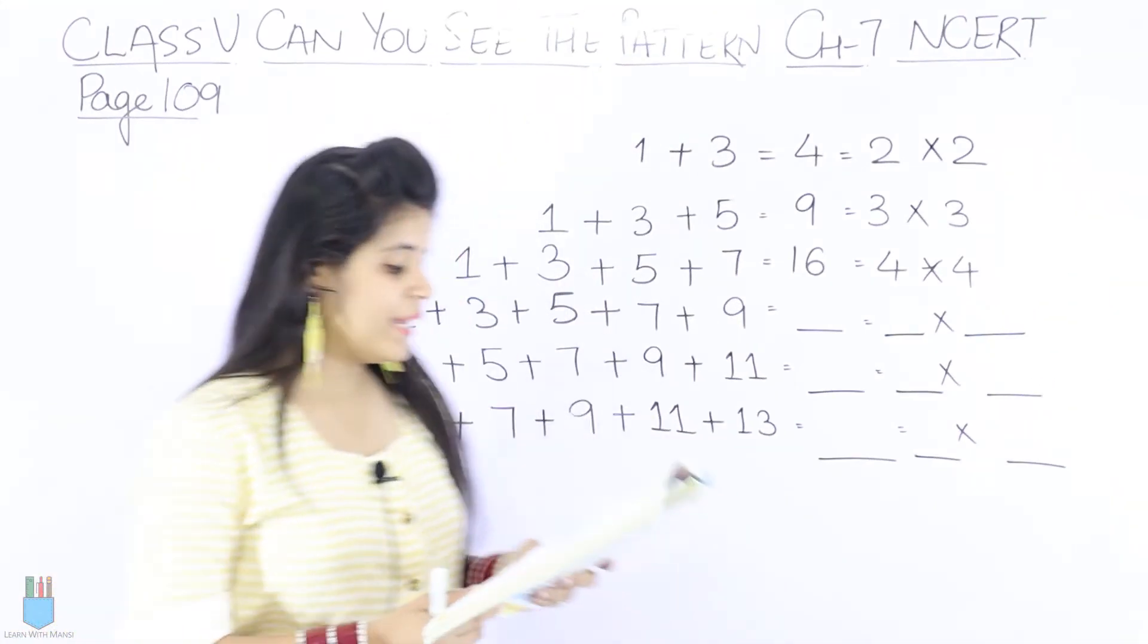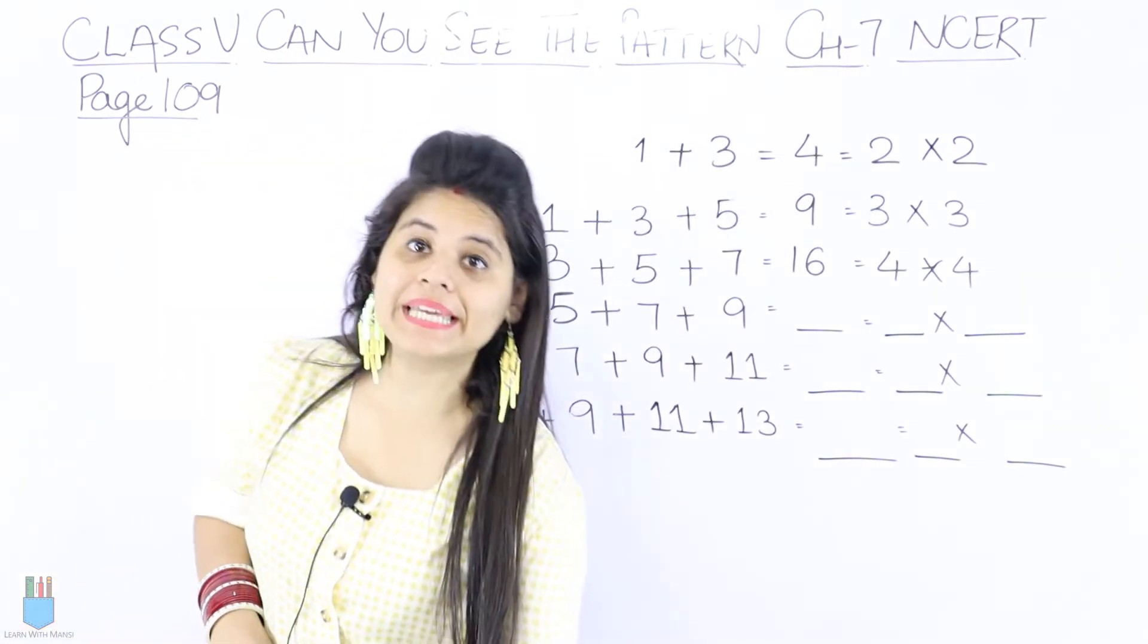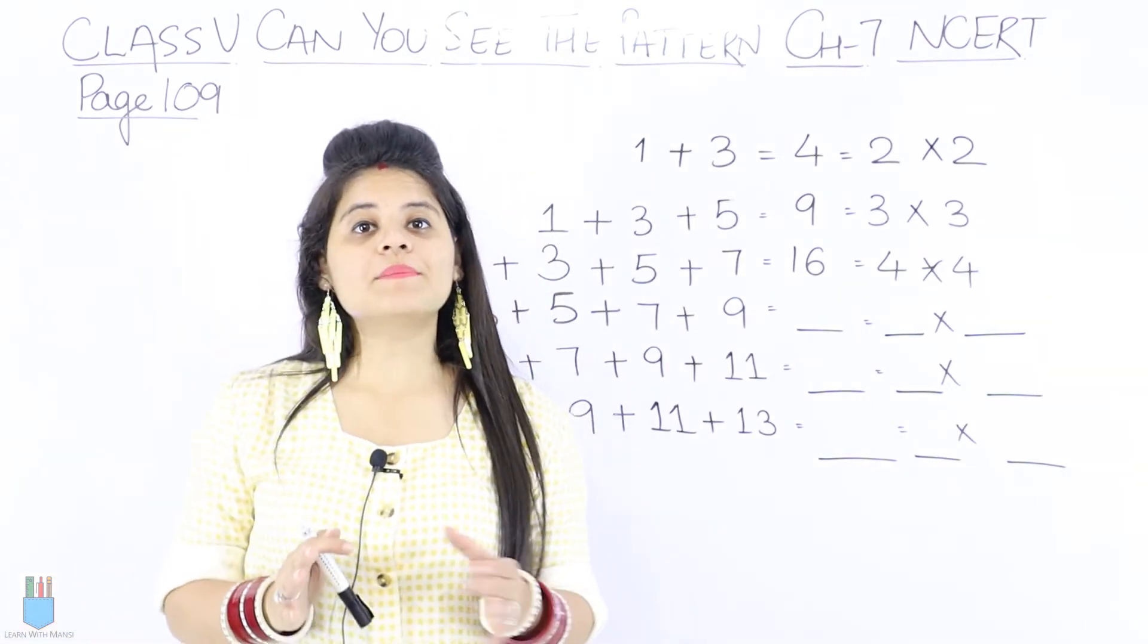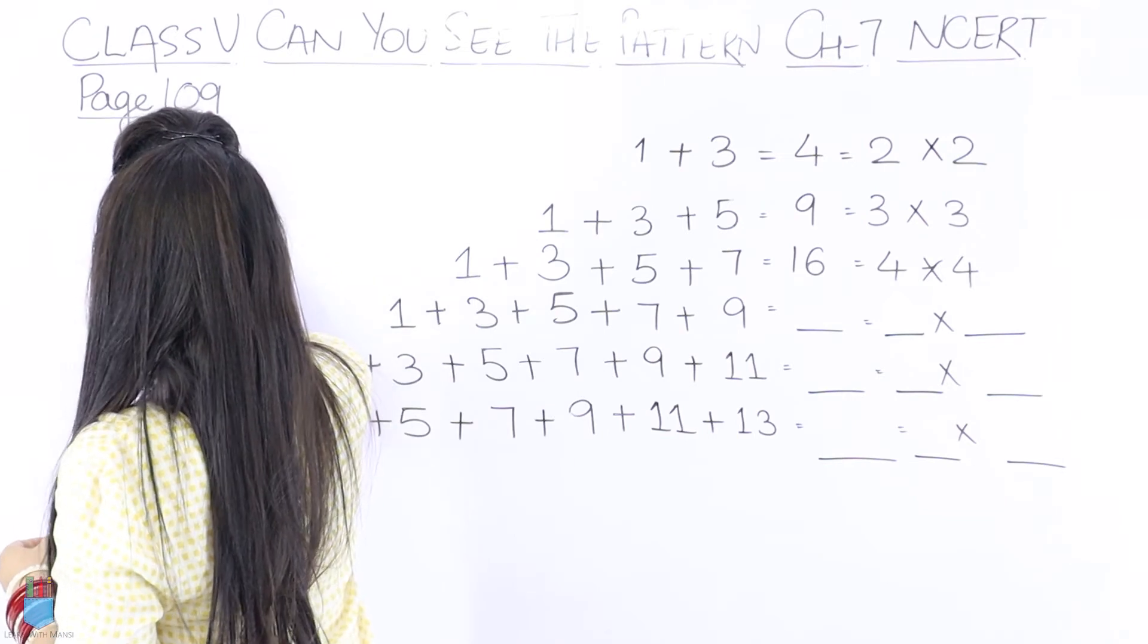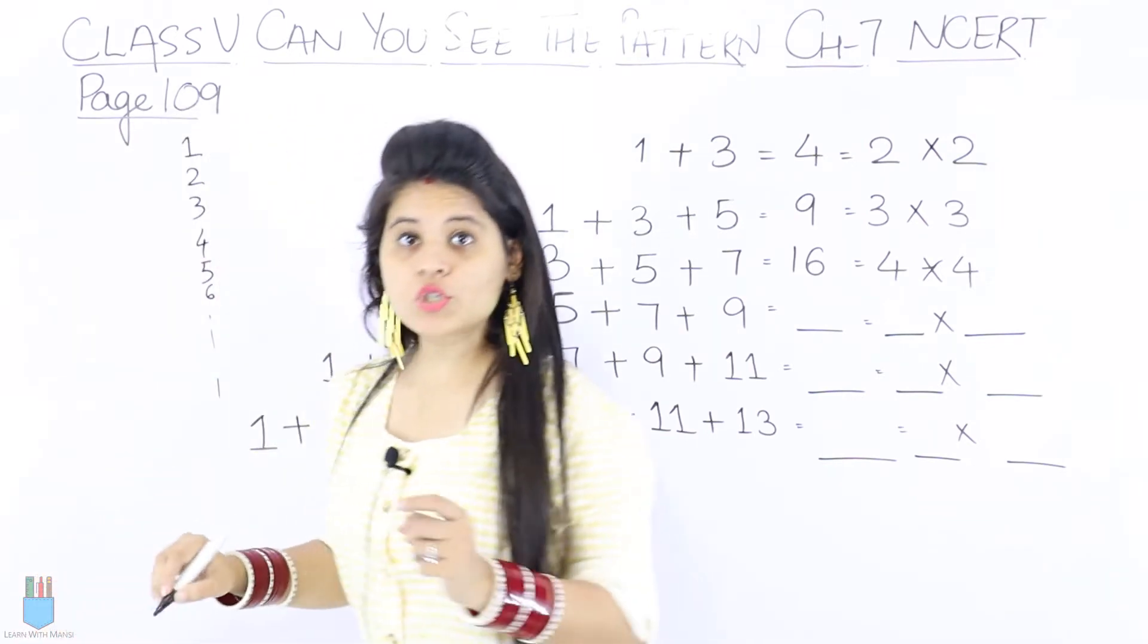Now the topic we have is fun with odd numbers. What are the odd numbers? Let's discuss these first. If I write the counting as 1, 2, 3, 4, 5, 6 and so on, the odd numbers are 1, 3, 5.